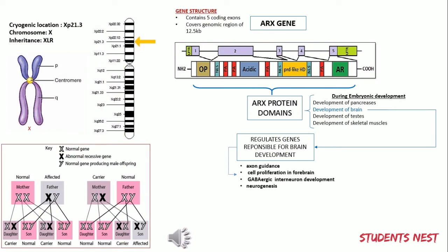Some functions regulated by the ARX protein include: axon guidance, where neurons spread their axons until they reach appropriate positions; cell proliferation in the forebrain, a major part of forebrain development where progenitor cells divide to produce greater numbers of cells; GABAergic interneuron development — these are inhibitory neurons that play a vital role in neural circuitry and activity; and neurogenesis, the process by which neurons are produced by neural stem cells. In addition, it is believed that the ARX protein regulates more than 80 genes involved in brain development.